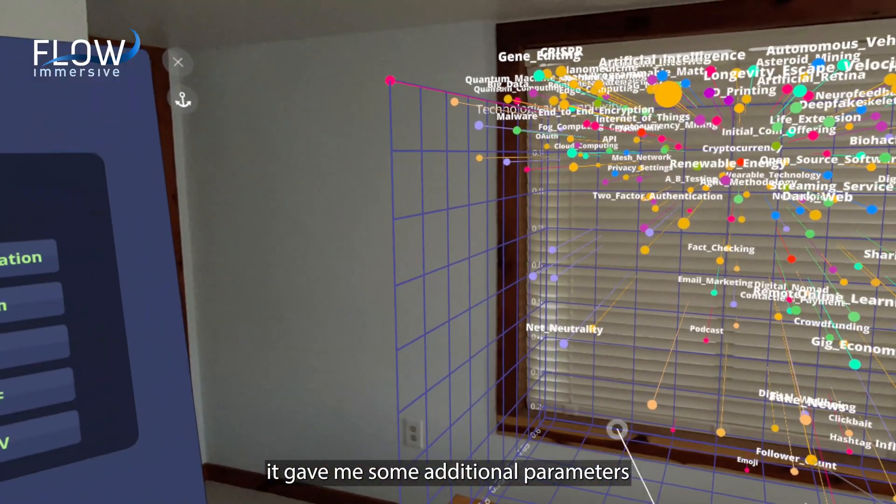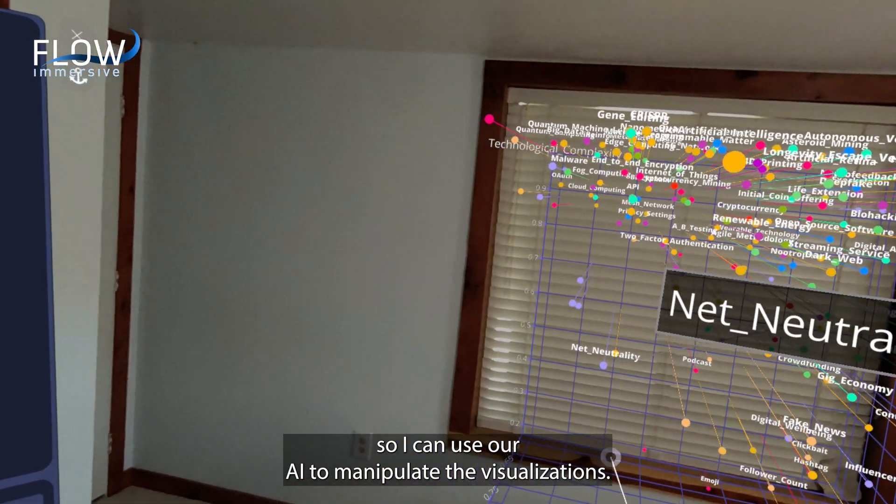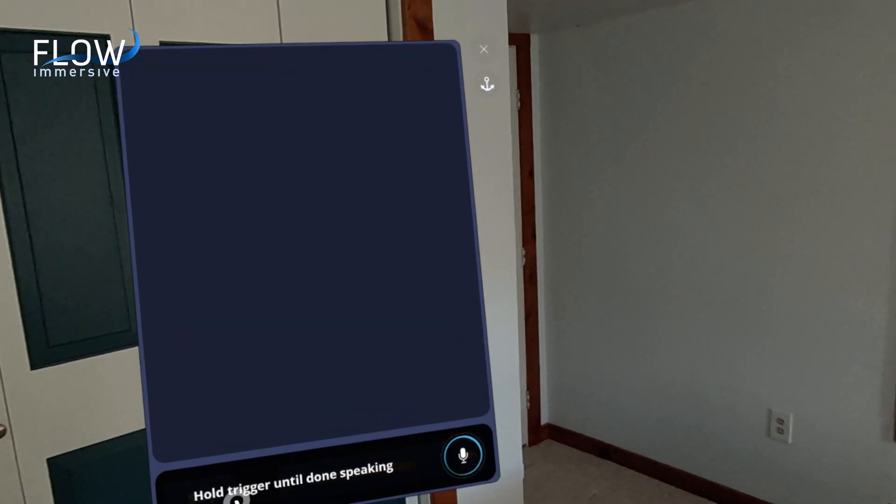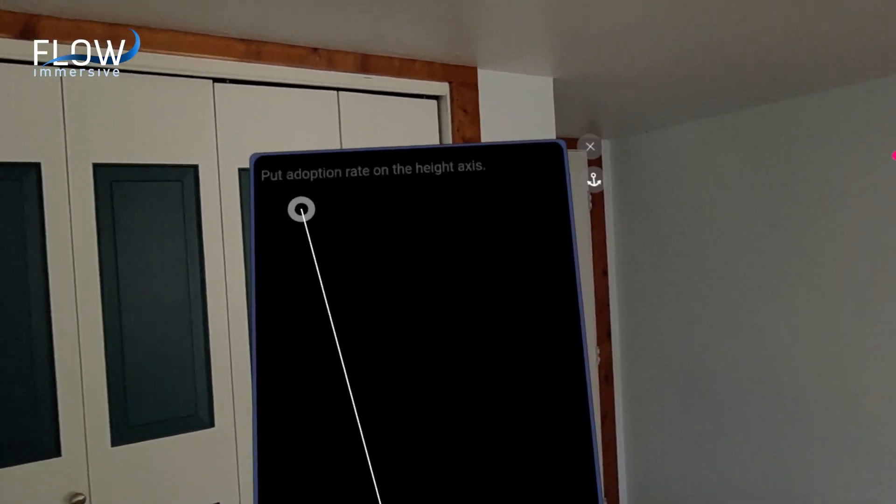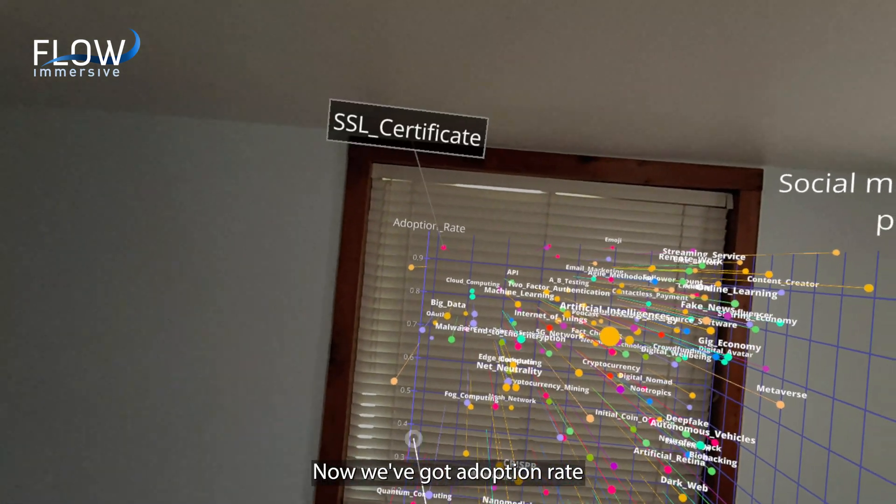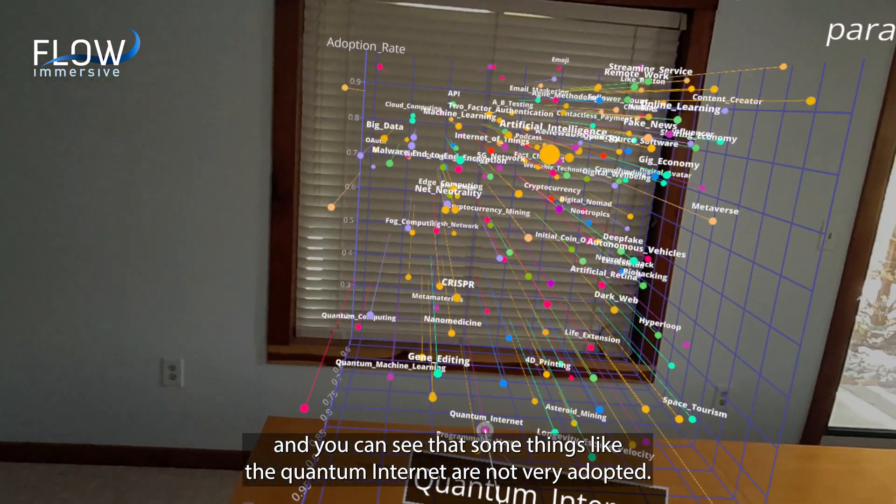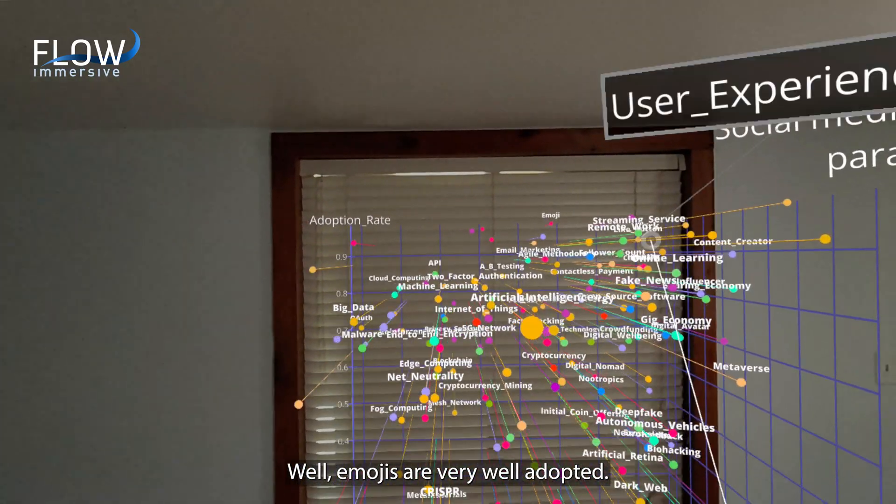It gave me some additional parameters so I can use our AI to manipulate the visualization. Put adoption rate on the height axis. Recognizes it. Look over here. Now we've got adoption rate and you can see that some things like the quantum internet are not very adopted while emojis are very well adopted.